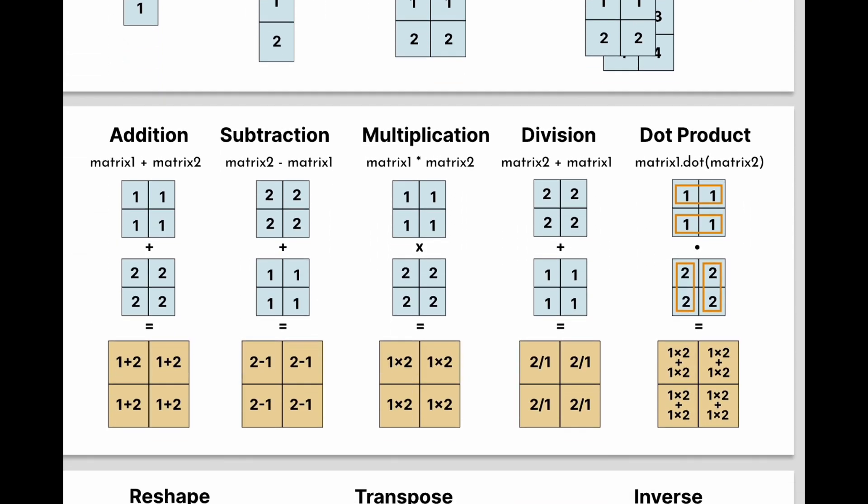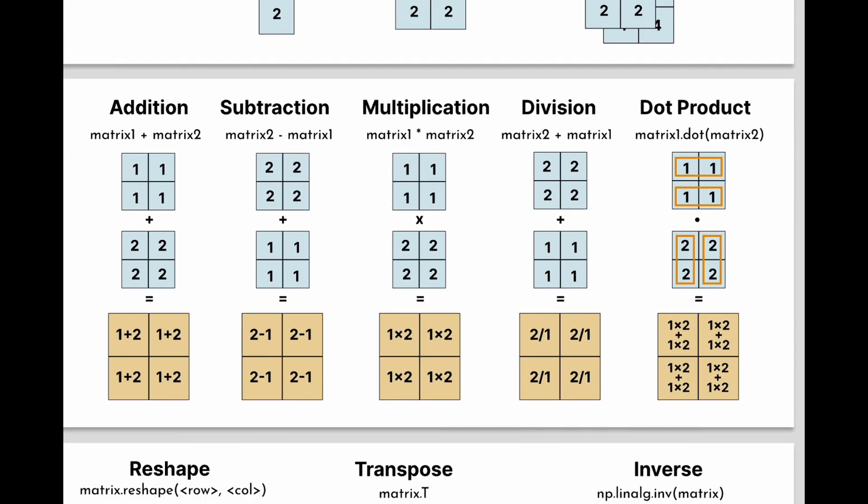Similar to how we perform mathematical operations on numbers, the same logic also works for matrices and vectors. However, please note that these operations on matrices have restrictions on two matrices being the same size. This is because they are performed in an element-wise manner, and this is different from matrix dot product. For example, to add two matrices together, we follow the syntax of matrix1 plus matrix2 in Python.